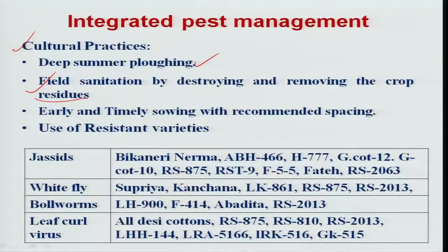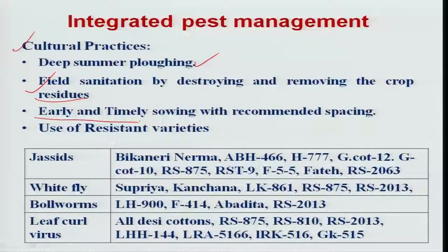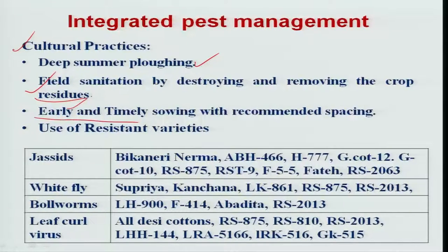Regarding date of sowing, early or timely sowing is recommended. In the south, for Tamil Nadu, early sowing means June to July-August. If you sow early, the majority of insects can be avoided.